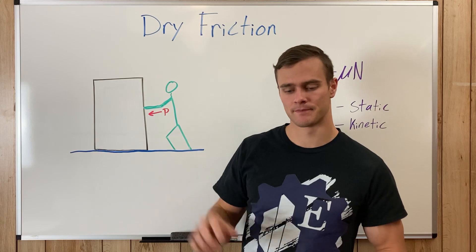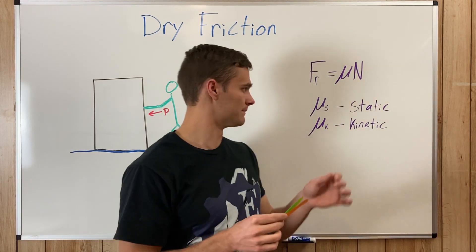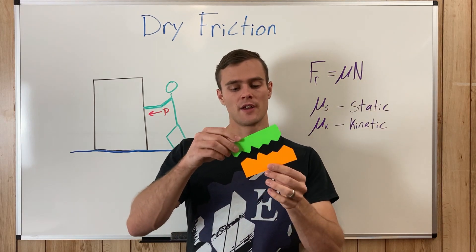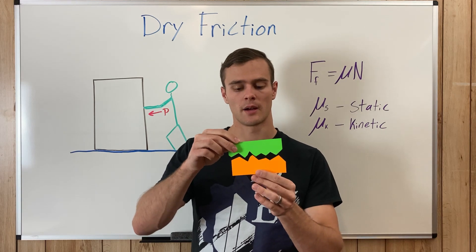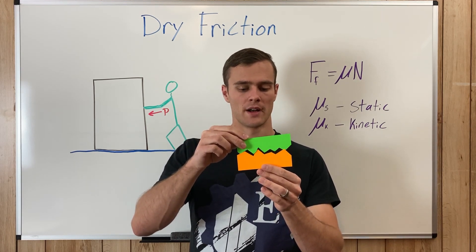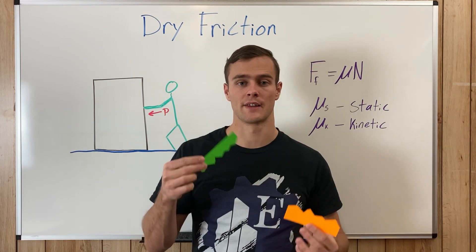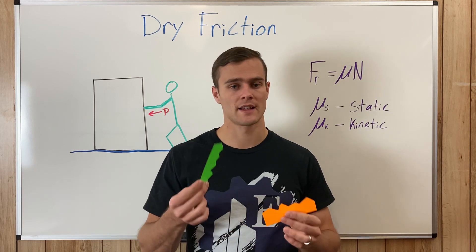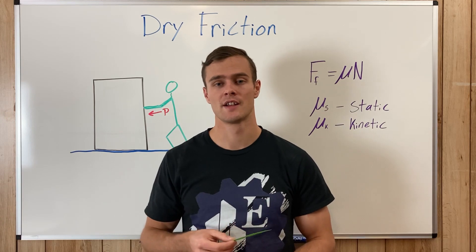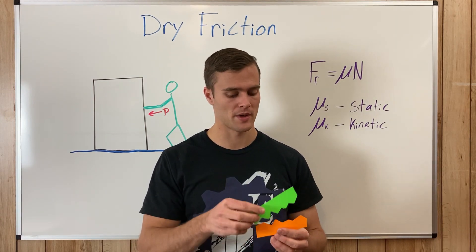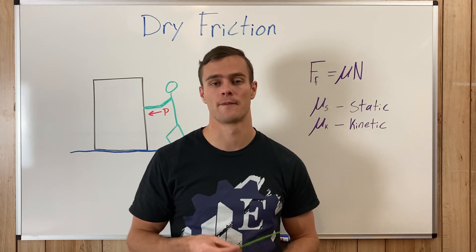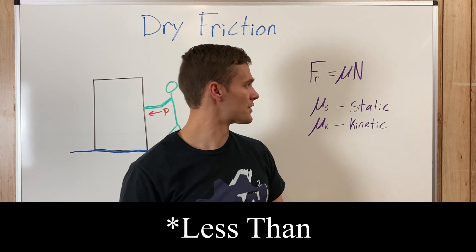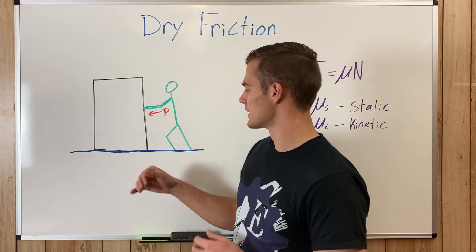There are two different coefficients of friction: static and kinetic. The friction force when the ridges are interlocked is greater than when the surfaces are already sliding along each other. As a fun fact, the coefficient of kinetic friction is about 25% less on average than the static friction coefficient. So with the same two objects, the static friction coefficient will be about 25% more than the kinetic friction.